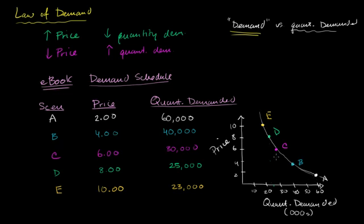If demand were to change, we would actually have a different curve. This curve would shift, or the entries in this table would shift. If the quantity of demand changes, we move along this curve, when you hold everything else equal, and you only change price.